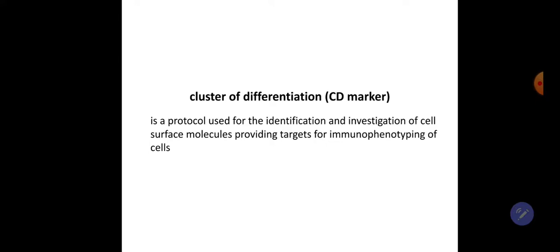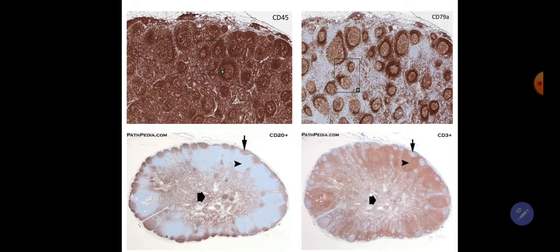The cluster of differentiation, or CD marker, is a protocol used for identification and investigation of cell surface molecules, providing targets for immunophenotyping of cells. CD45 is the essential marker of the lymphocyte — either B or T — so if we need to identify a lymphocyte and distinguish it from other cells that resemble it, we use this marker.